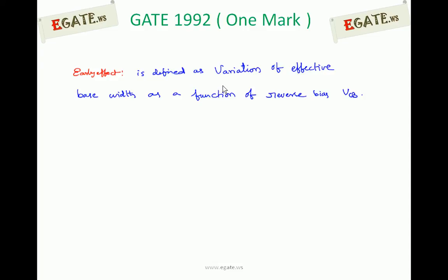Early effect, or base width modulation, is defined as the variation of effective base width as a function of reverse bias voltage VCB. Note it is the effective base width, not the original base width. VCB is the voltage across the collector base junction, that is, the reverse voltage. We will now see the details of early effect and how effective base width reduces as VCB increases.